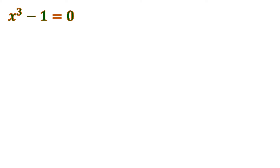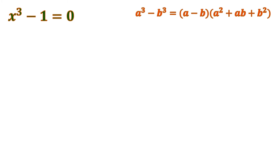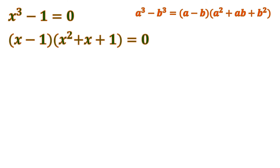Now how to do it. Observe that this is a difference of two cubes — x cubed minus 1 cubed, because 1 cubed is still 1. If you remember the rule for difference of two cubes, it's going to be (a minus b) times (a squared plus ab plus b squared), where a is x and b is 1. So following the rule, it's (x minus 1) times (x squared plus x plus 1) equals 0.